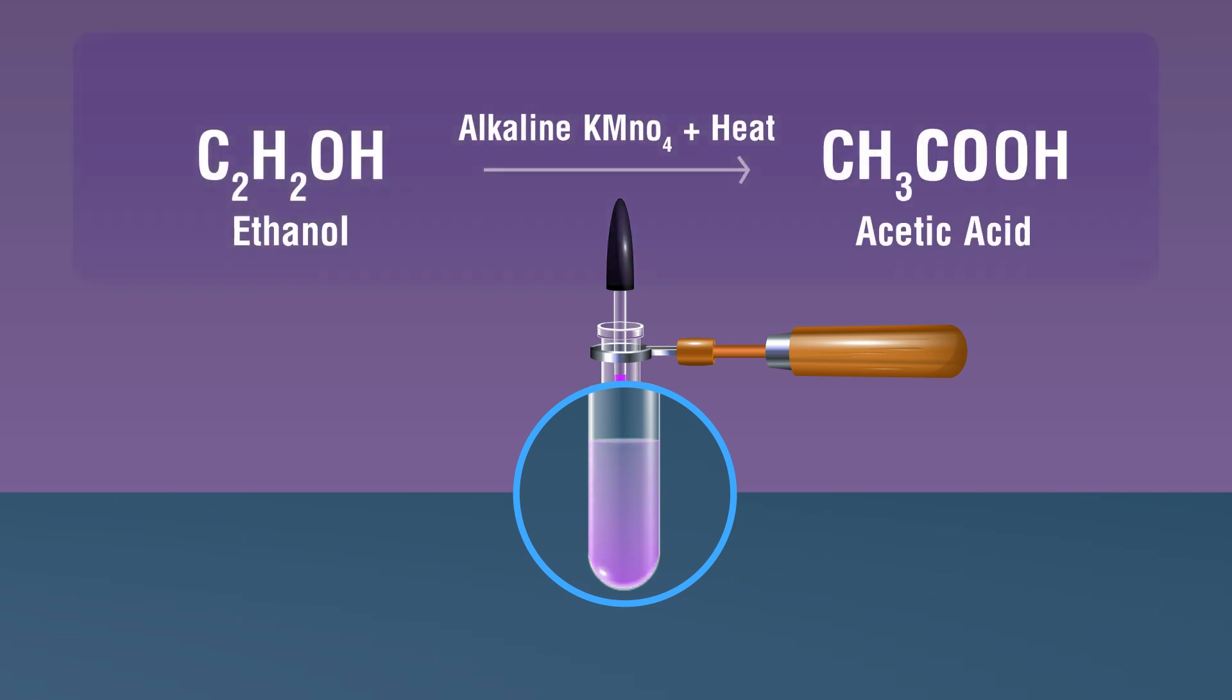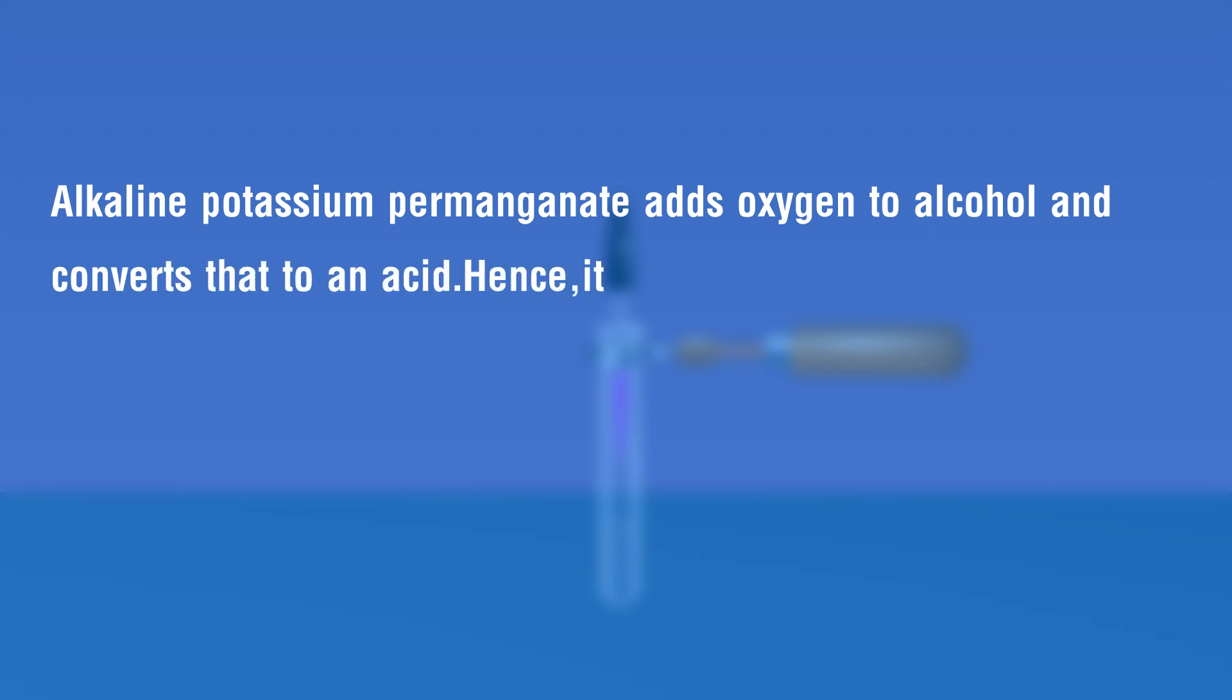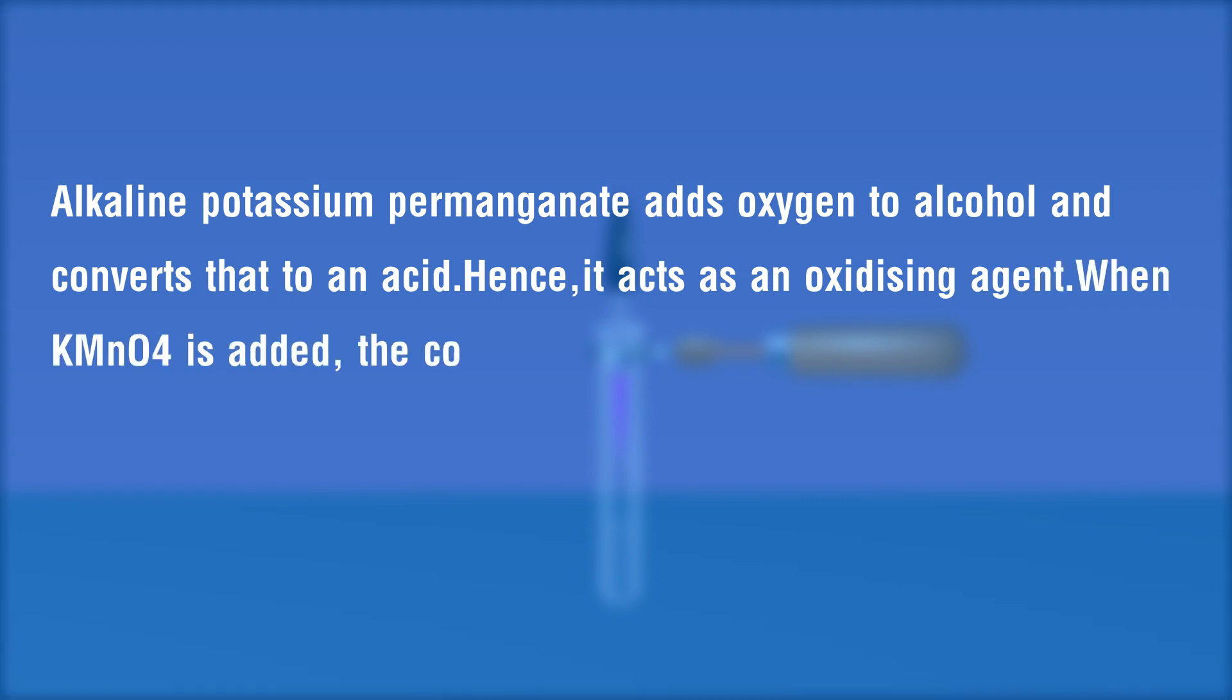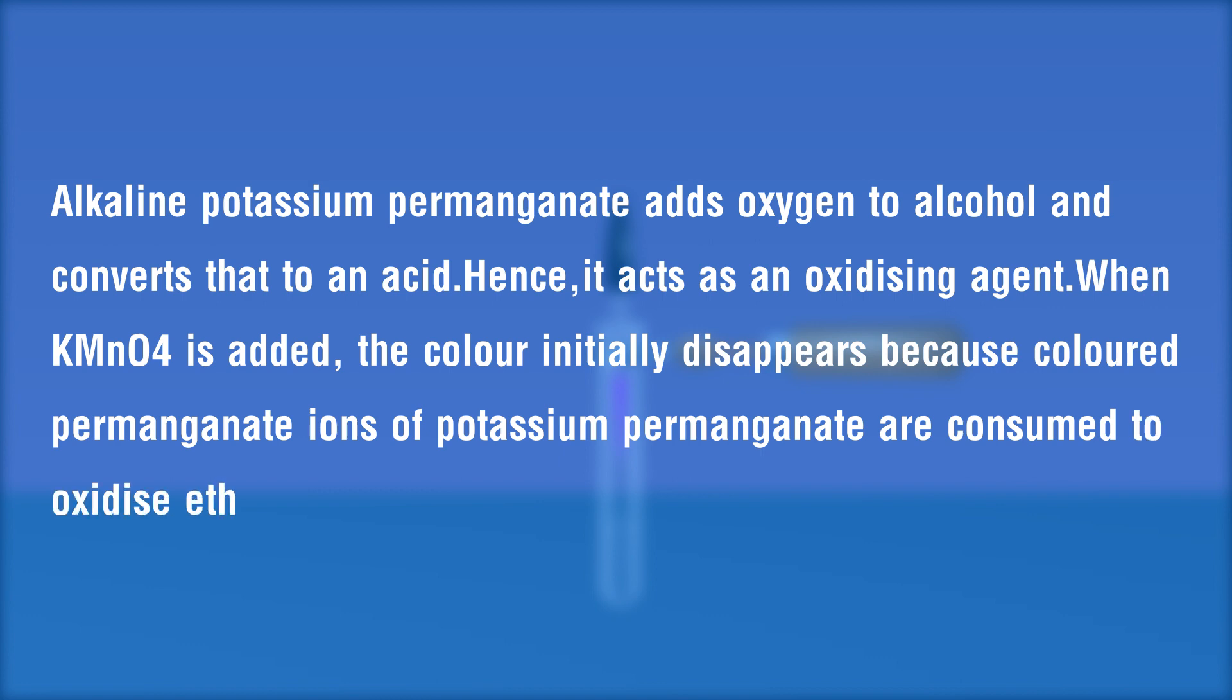Alkaline potassium permanganate adds oxygen to alcohol and converts it to an acid, hence it acts as an oxidizing agent. When KMnO4 is added, the color initially disappears because colored permanganate ions of potassium permanganate are consumed to oxidize ethanol.